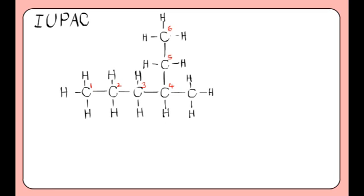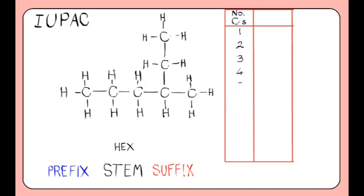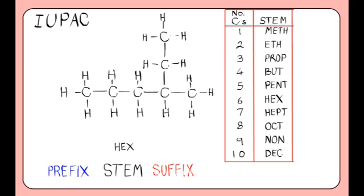The names of organic molecules have a prefix, stem, and suffix. As the longest carbon chain is 6, this will have the stem of 'hex'. Next, we can look at the branches off the main chain. We have a one-carbon chain branch off the main chain, and this is called a methyl group, which forms the prefix.